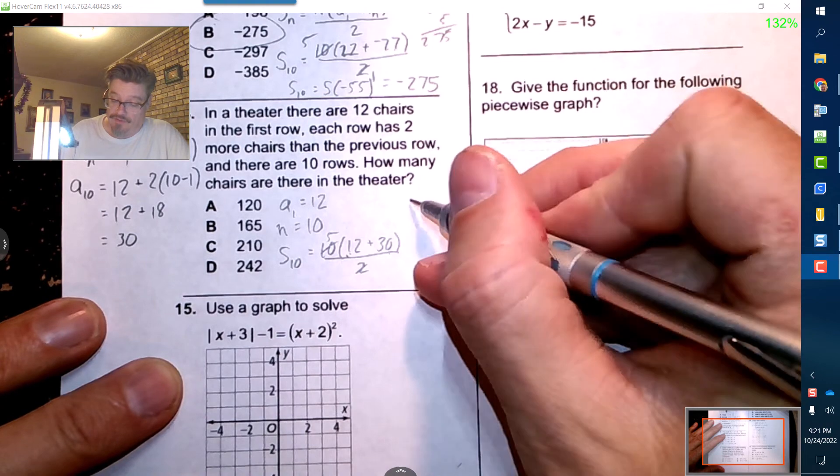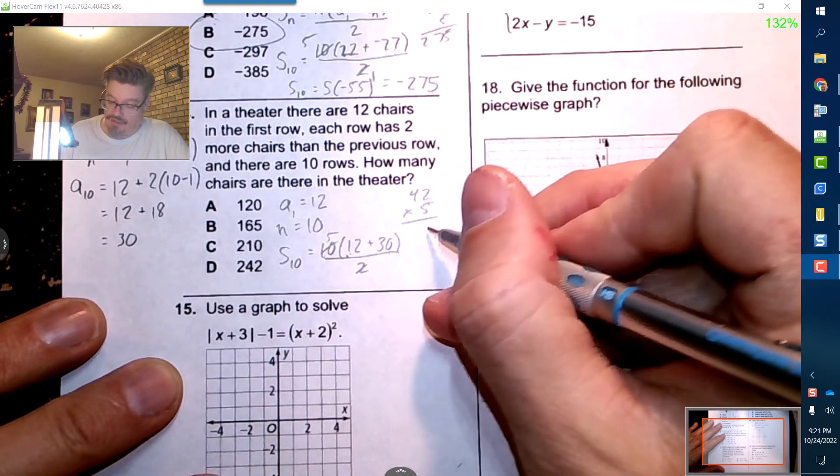This adds up to 42, so 42 times 5 is 210.